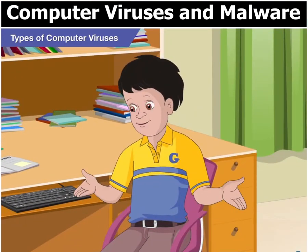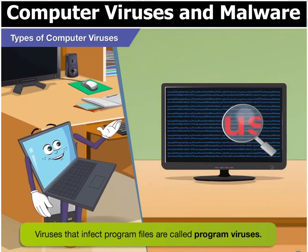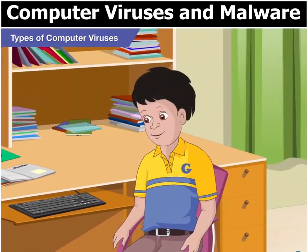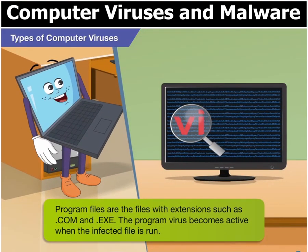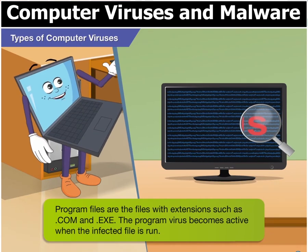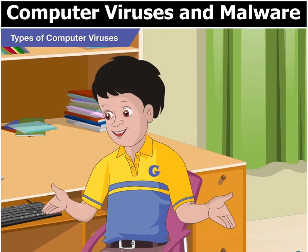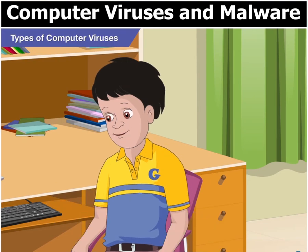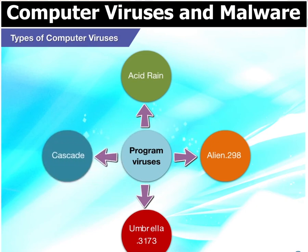Tell me a little about each of them. Sure Goggle, viruses that infect program files are called program viruses. Which files are program files, Toggle? Program files are widely used files with extensions such as .com and .exe. The program virus becomes active when the infected file is run. Can you give me some examples of program viruses? Sure — Acid Rain, Alien.298, Umbrella.3173, and Cascade are all program viruses.